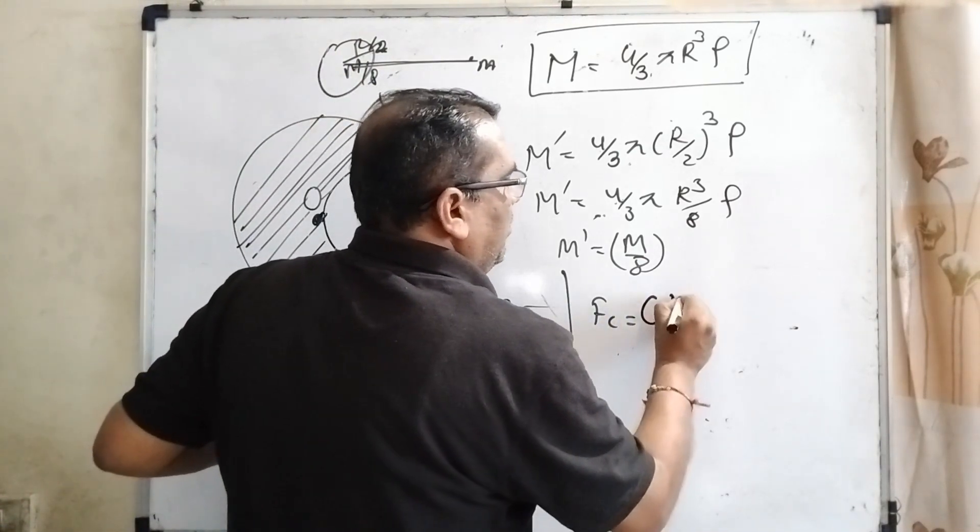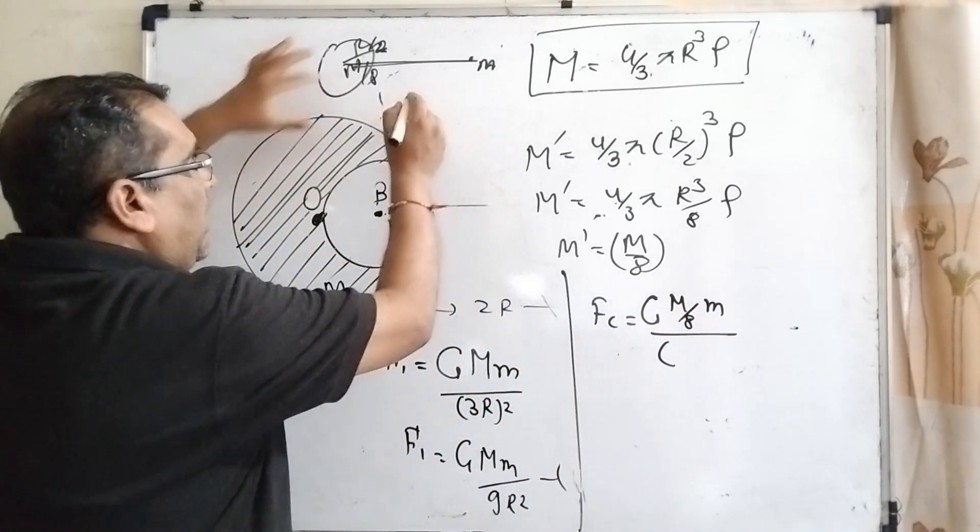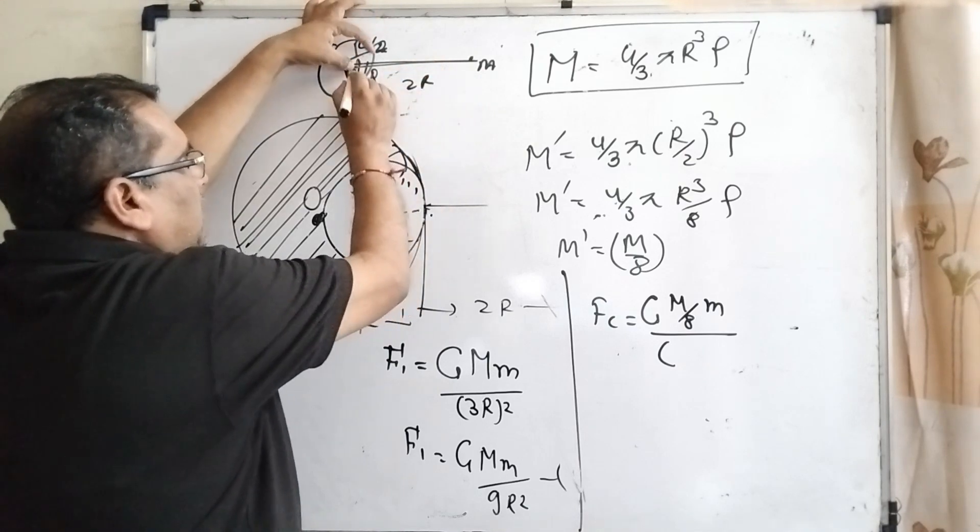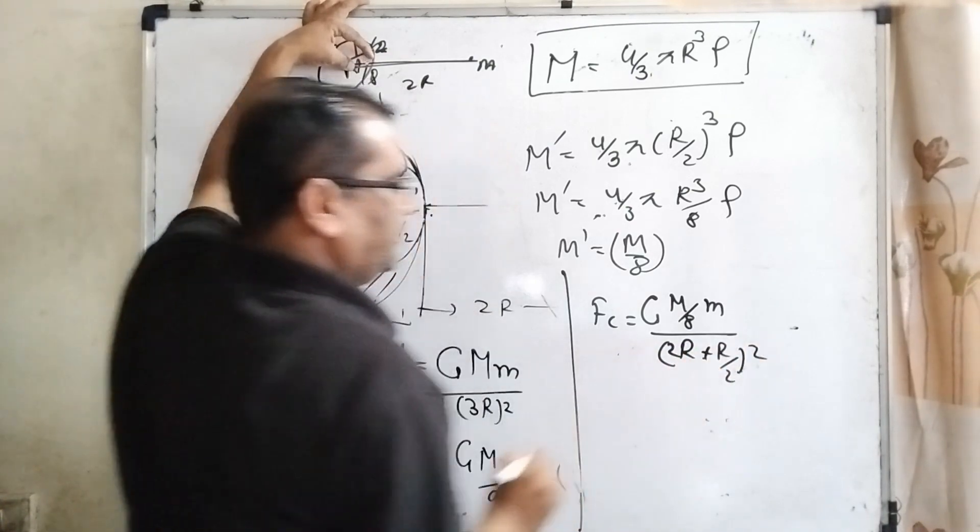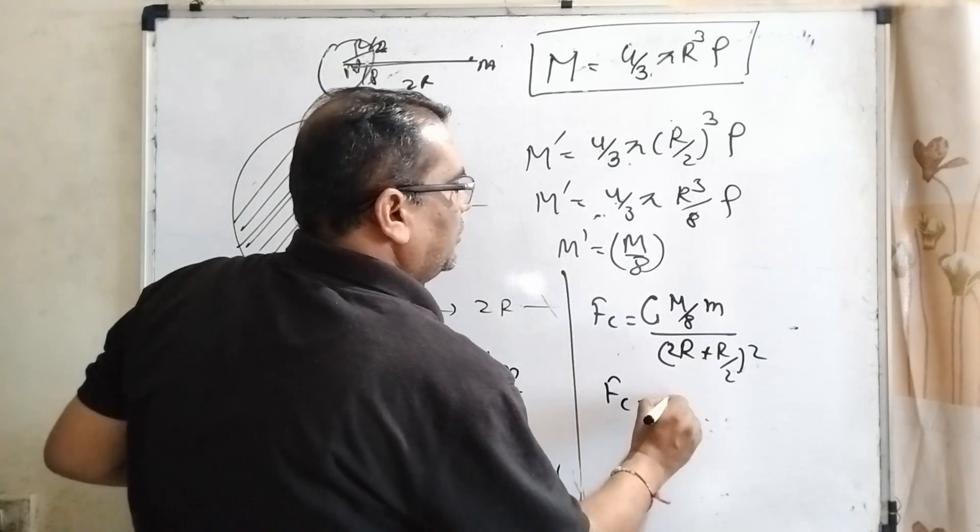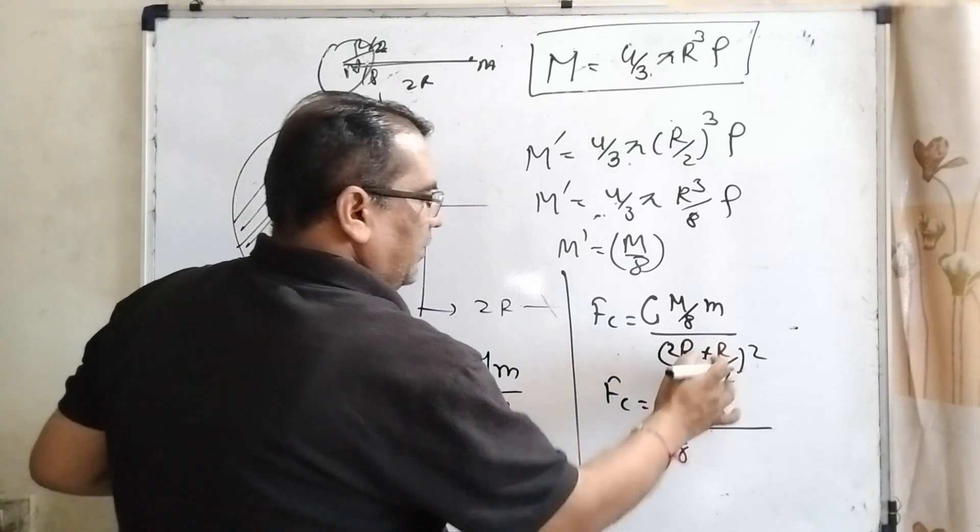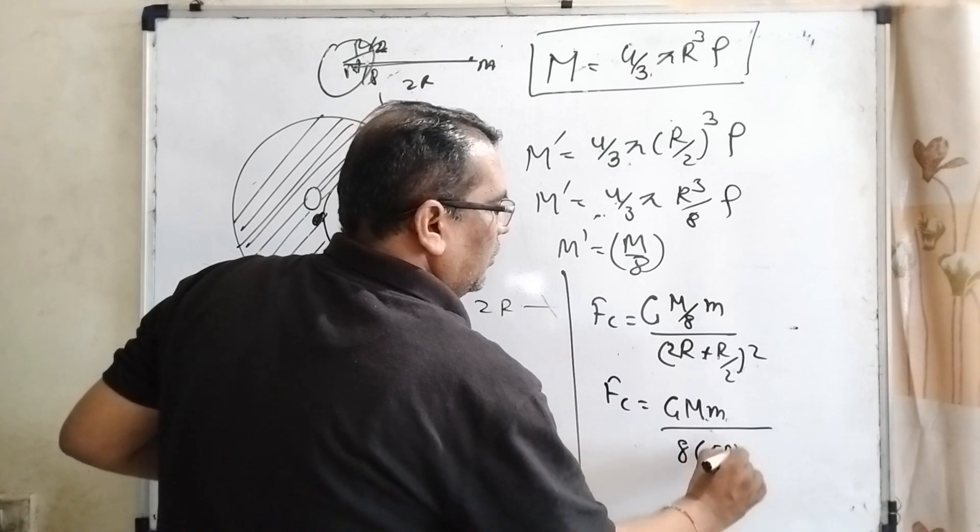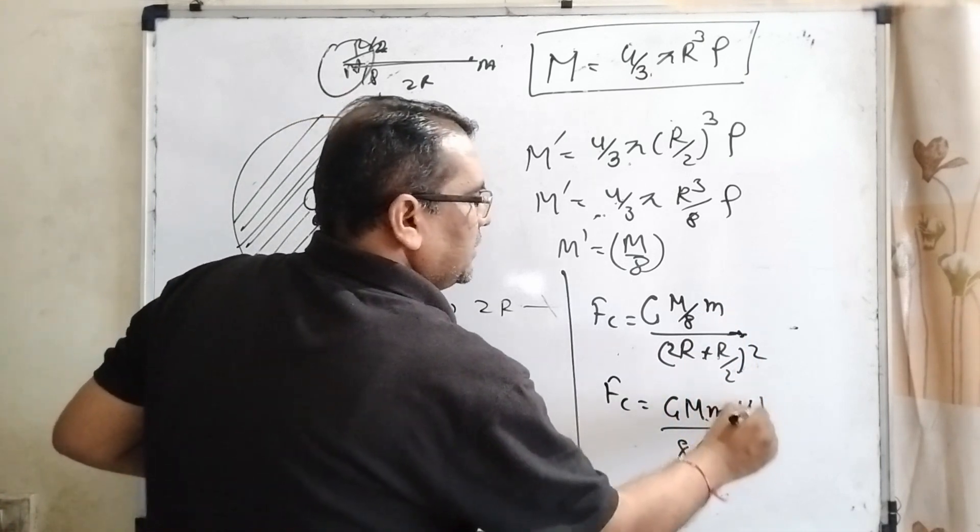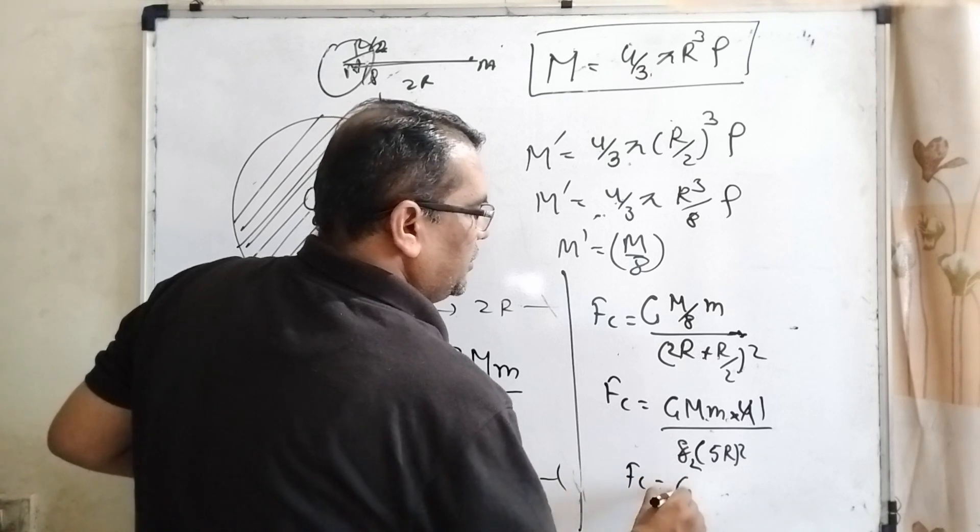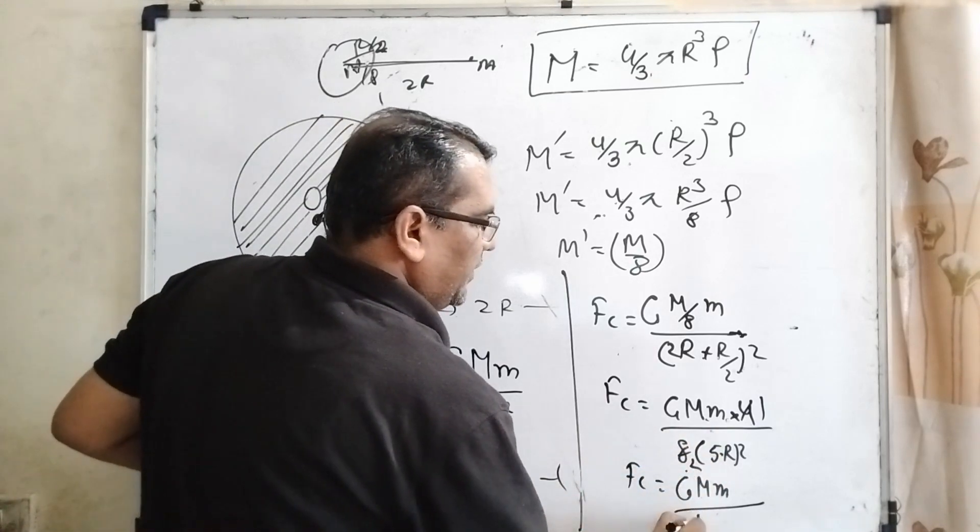Okay, this force we have to consider Fc. Then, G M by 8 and small particle is m. And the distance, this point, this is 2R and this is R by 2. Then, 2R plus R by 2 whole square. How much? Fc equal to G capital M small m by 8, 2.5 R whole square. Now, 2 square becomes 4 and it goes to the numerator. Okay, 4 with the 8, 4 into 8. Fc equal to G M small m upon 5 square means 25, upon 50 R square.